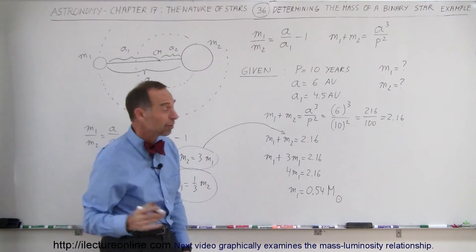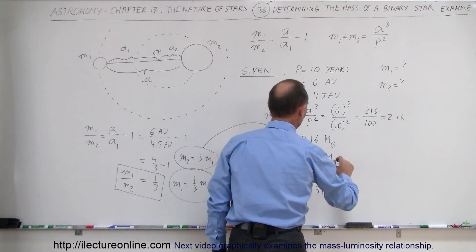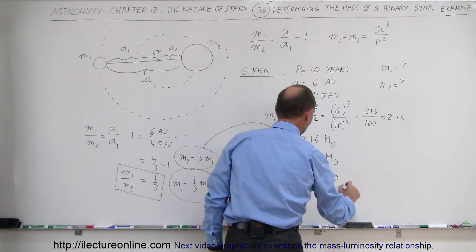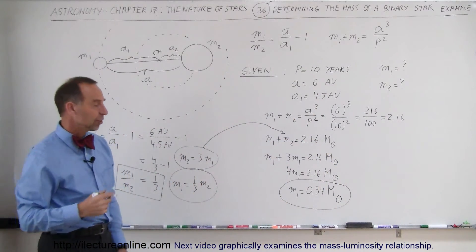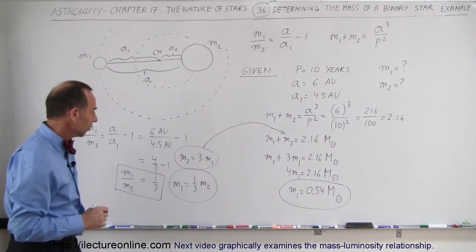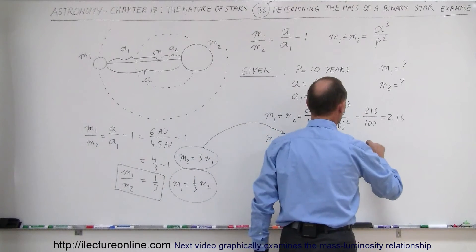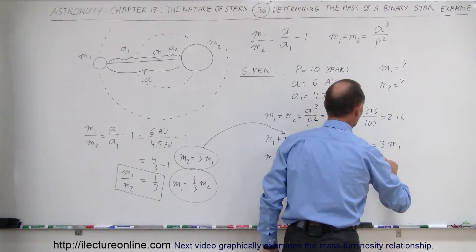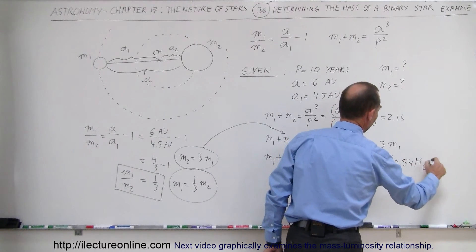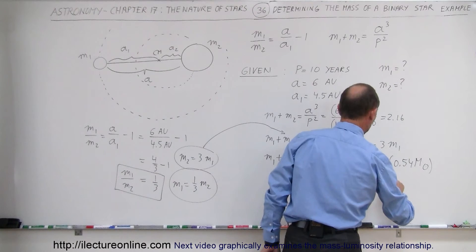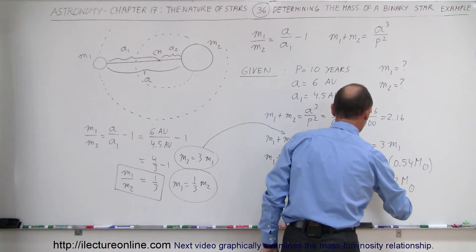The units are always going to be in terms of the mass of the sun. So M1 is 0.54 solar masses, which means the small star has about half the mass of the sun. For the large star, M2 equals three times M1, which is three times 0.54 solar masses, giving M2 equal to 1.62 solar masses.